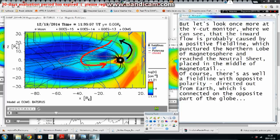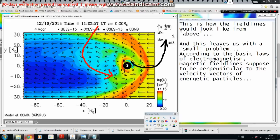But let's look once more at the Y-CAT monitor where we can see that the inward flow is probably caused by a positive field line which punctured the northern lobe of magnetosphere and reached the neutral sheet placed in the middle of magnetotail. Of course there is as well a field line with opposite polarity directed out from Earth which is connected on the opposite part of the globe. And this is how the field lines would look like from above.